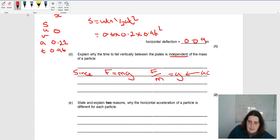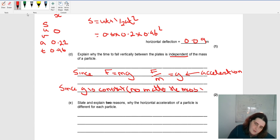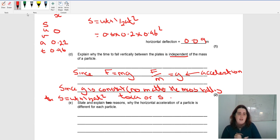Since G is constant, no matter the mass falling, the time S equals UT plus a half A T squared. The time is only proportional to A or S. So mass is not involved.